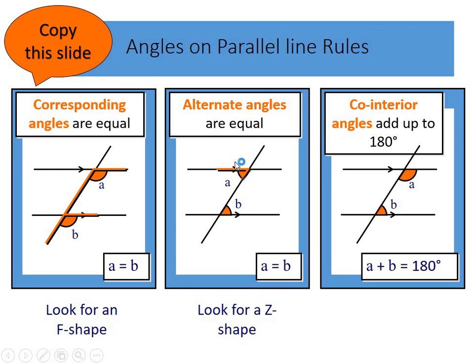Alternate angles, you look for a Z shape. The angles within the Zs will be the same. You would refer to this as alternate angles are equal.